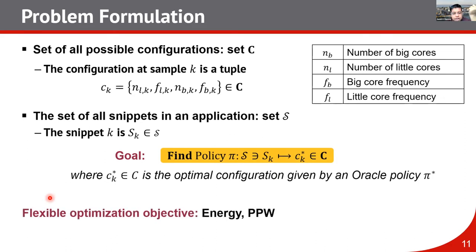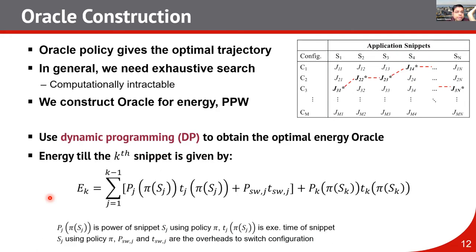The optimization objective can be anything — energy, performance per watt, latency, and so on. The oracle policy gives the optimal trajectory. For an application with N snippets and M distinct configurations for the platform, the oracle provides the optimal trajectory across all those snippets.